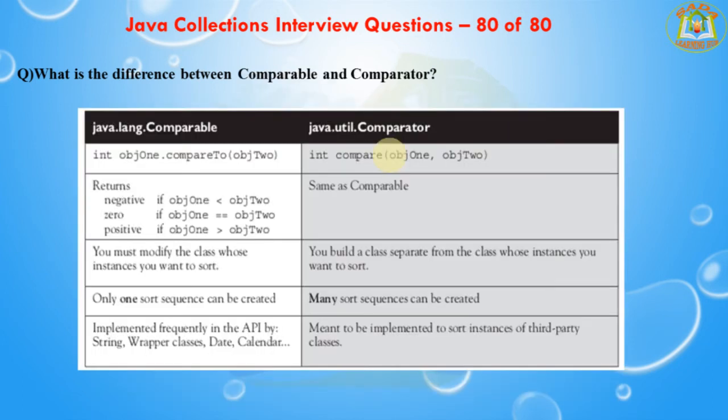The next question is what is the difference between Comparable and Comparator? Comparable provides only one sort sequence. Comparator provides multiple sort sequences. Comparable provides the compareTo method; Comparator provides the compare method. Comparable is found in the java.lang package; Comparator is found in the java.util package. If we implement the Comparable interface, the actual class is modified. If we implement the Comparator interface, the actual class is not modified.